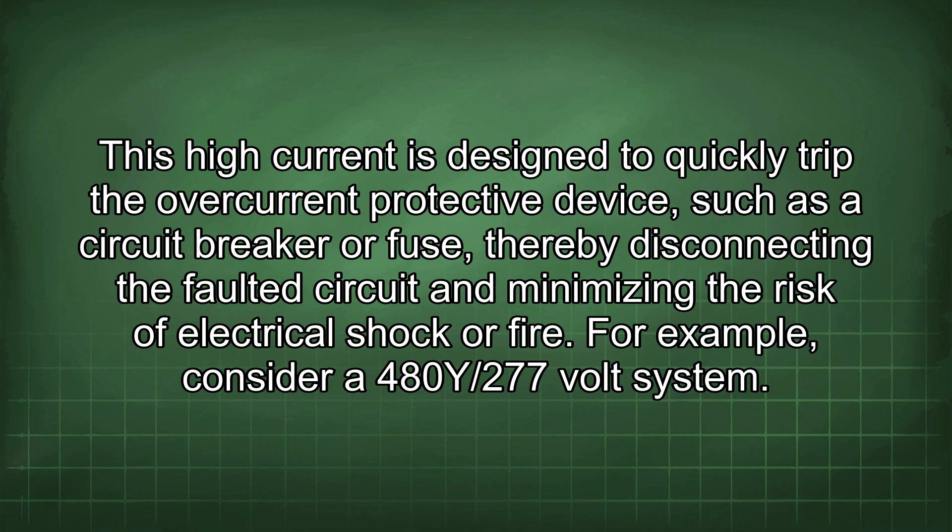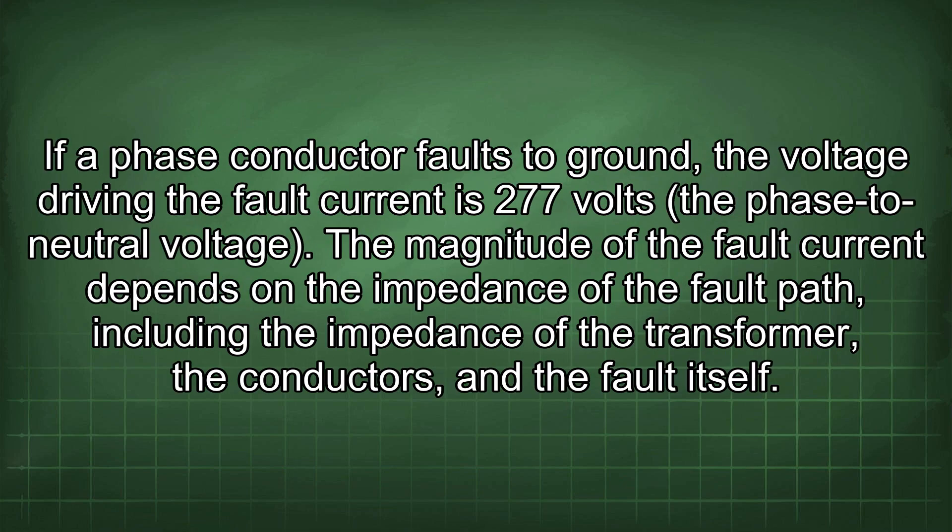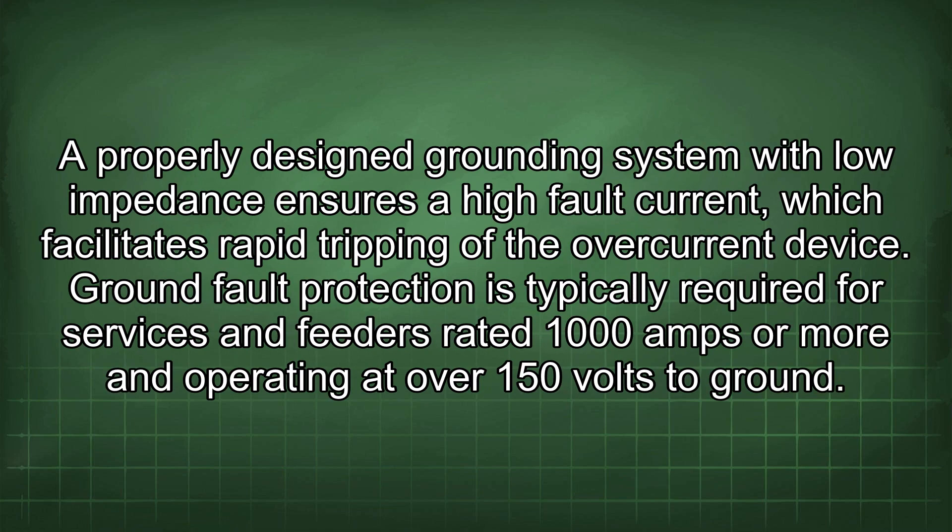For example, consider a 480Y/277 volt system. If a phase conductor faults to ground, the voltage driving the fault current is 277 volts, the phase-to-neutral voltage. The magnitude of the fault current depends on the impedance of the fault path, including the impedance of the transformer, the conductors, and the fault itself. A properly designed grounding system with low impedance ensures a high fault current, which facilitates rapid tripping of the overcurrent device.